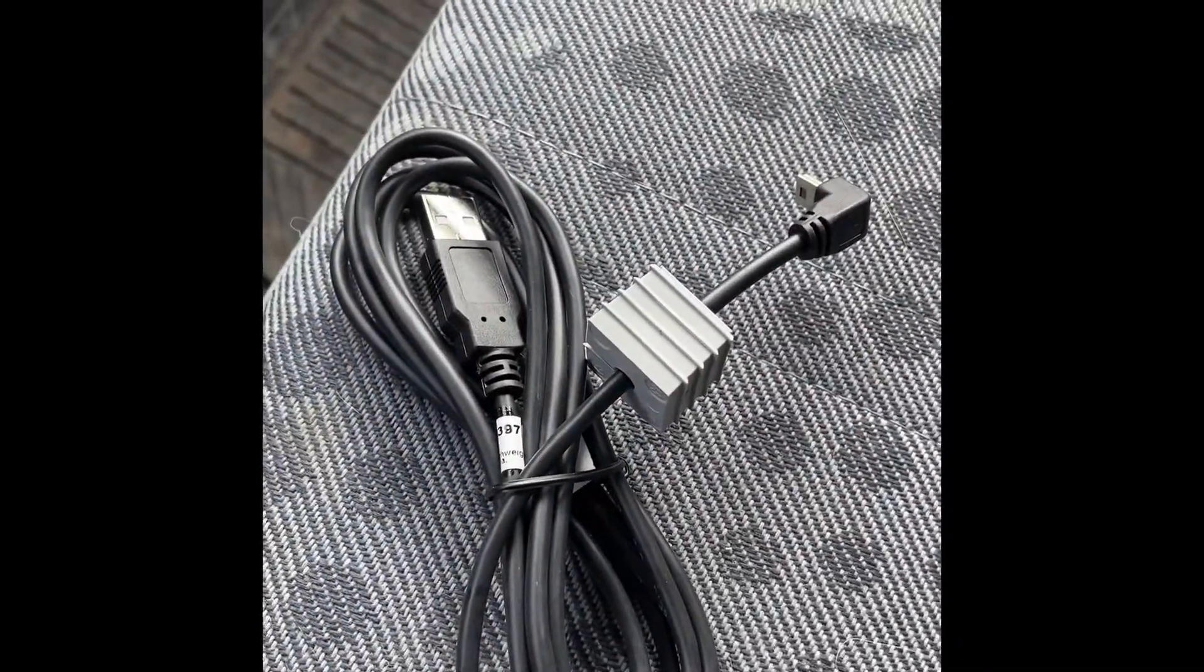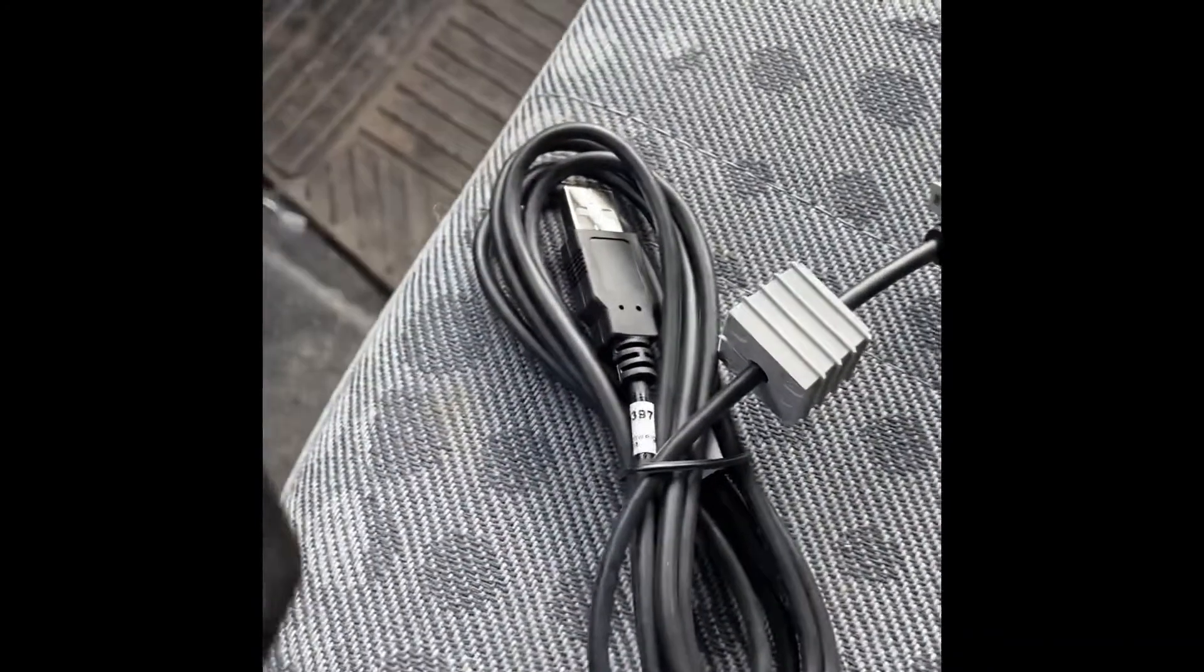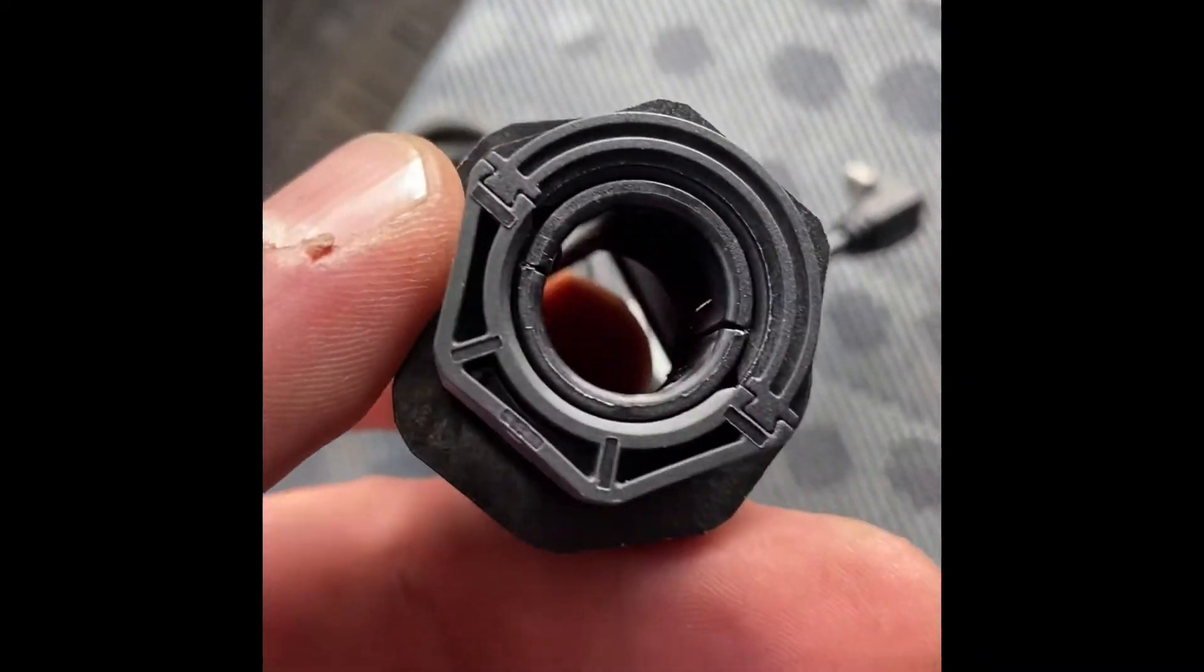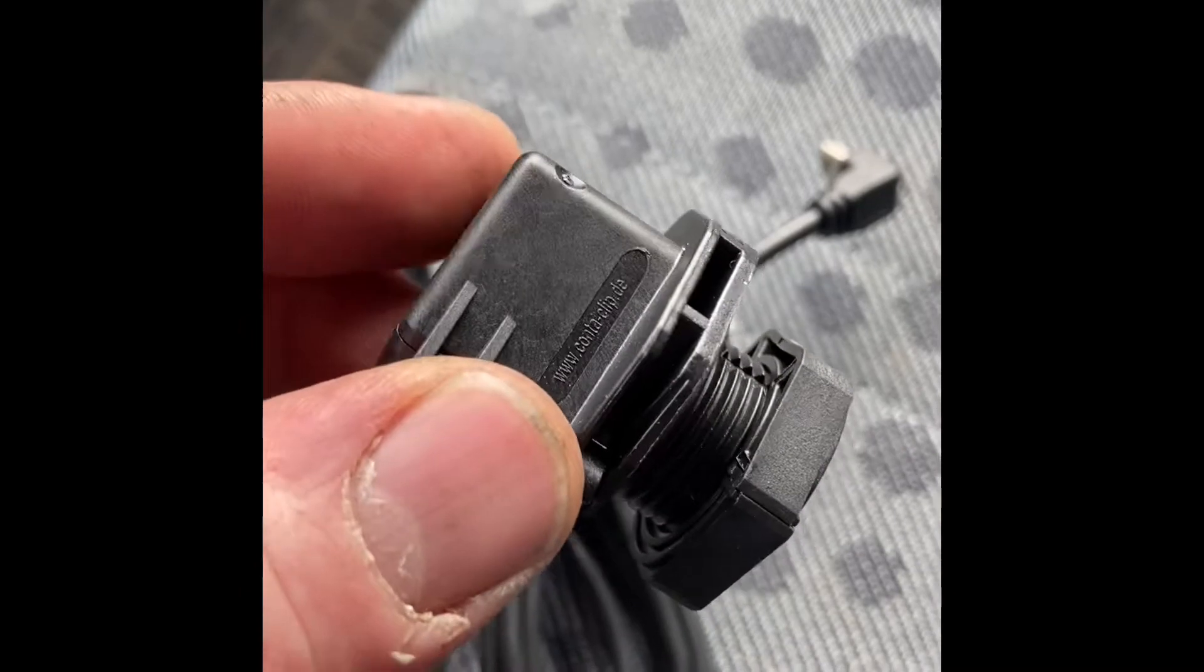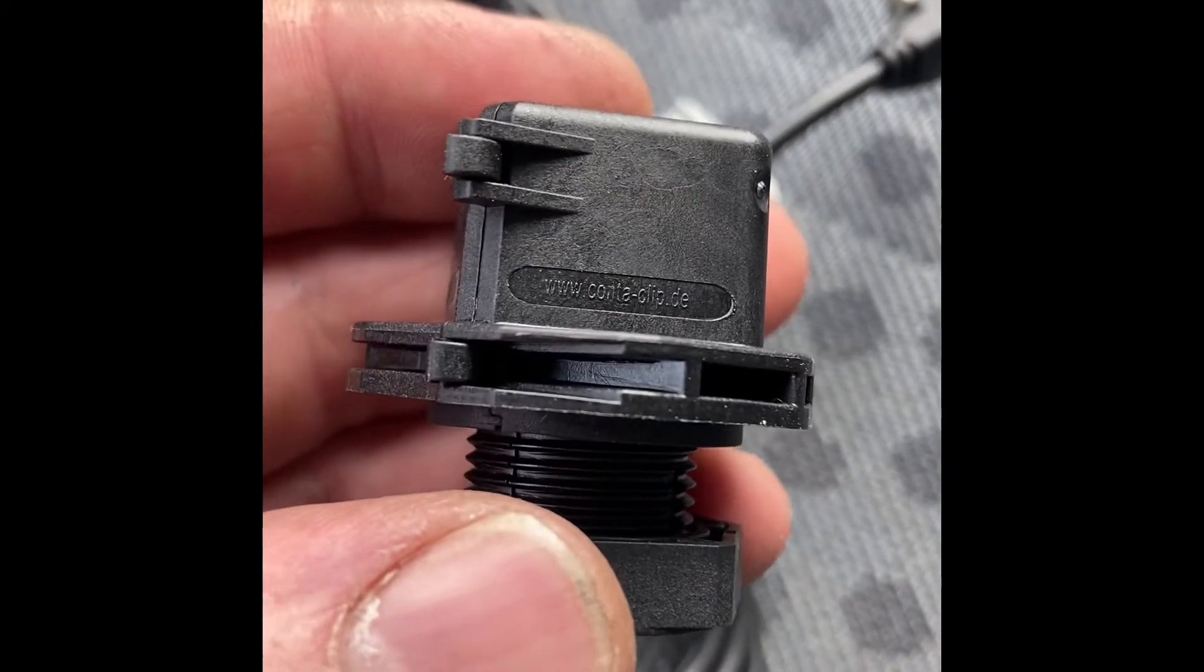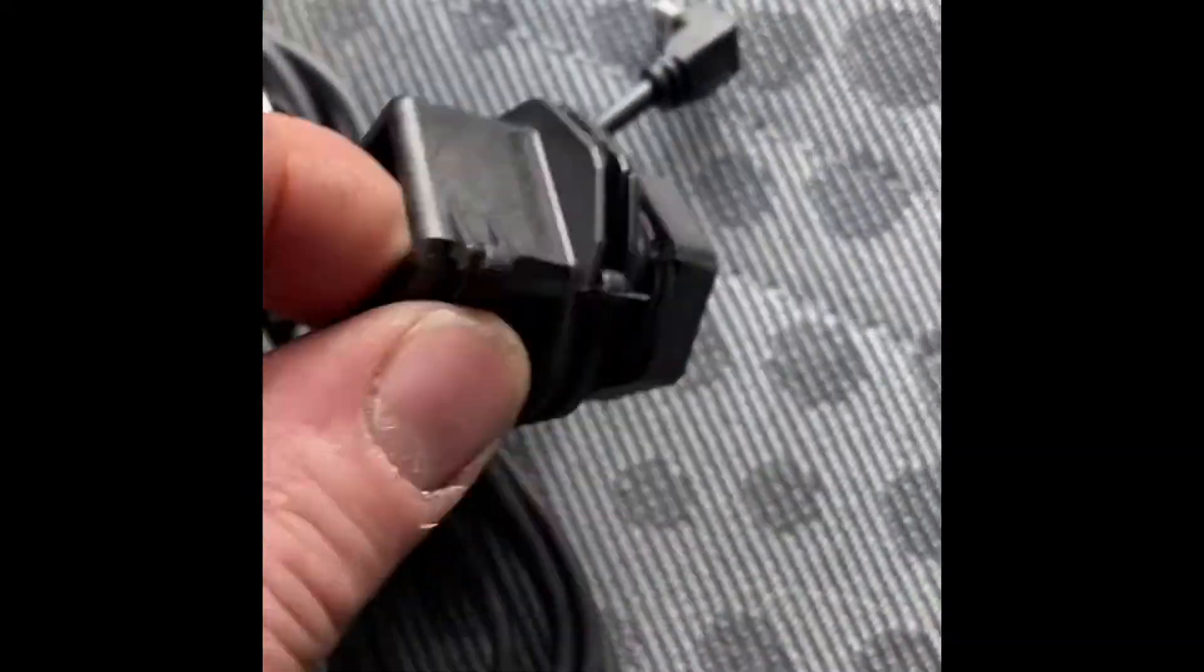Saa veronpoistajan sitten tuohon ehjään johtoon. Tämä on nyt M20 kokoa. Tämä on kätevä systeemi.